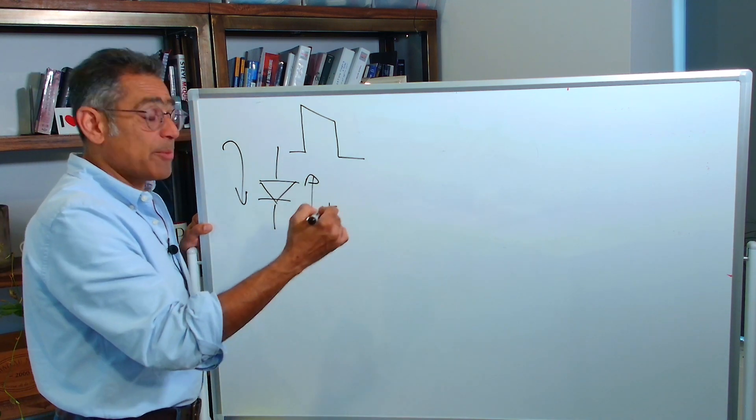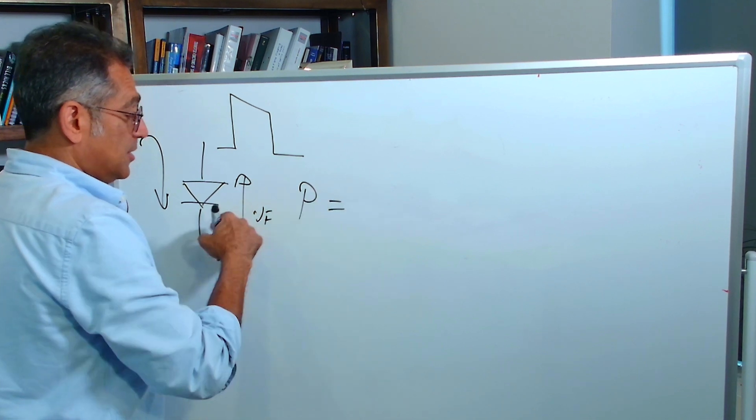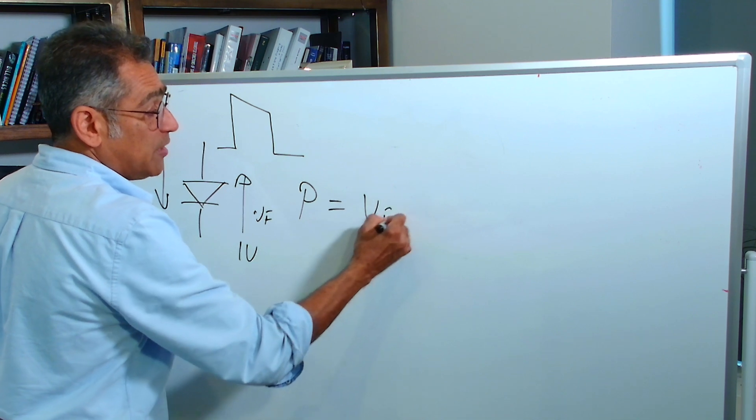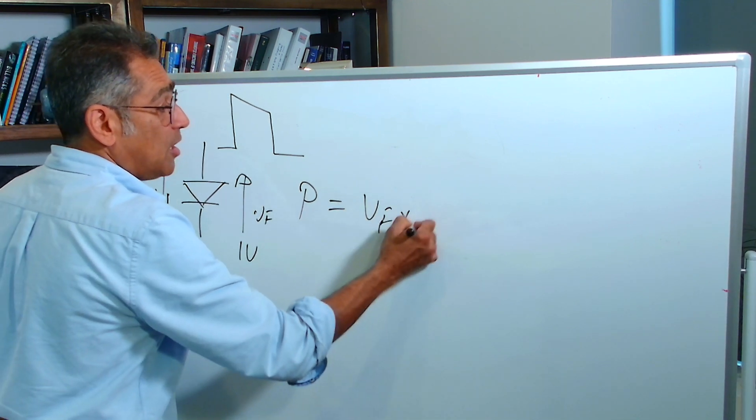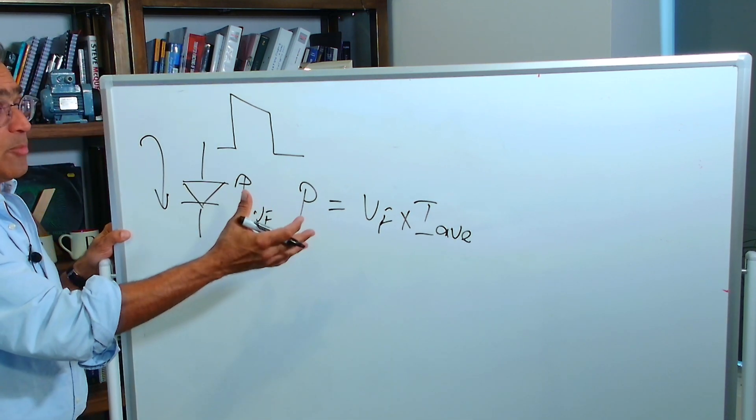Therefore to calculate the power, we will go with power within the diode lost is going to be the forward drop VF, which is a constant value times I average. I'll explain why in a moment.